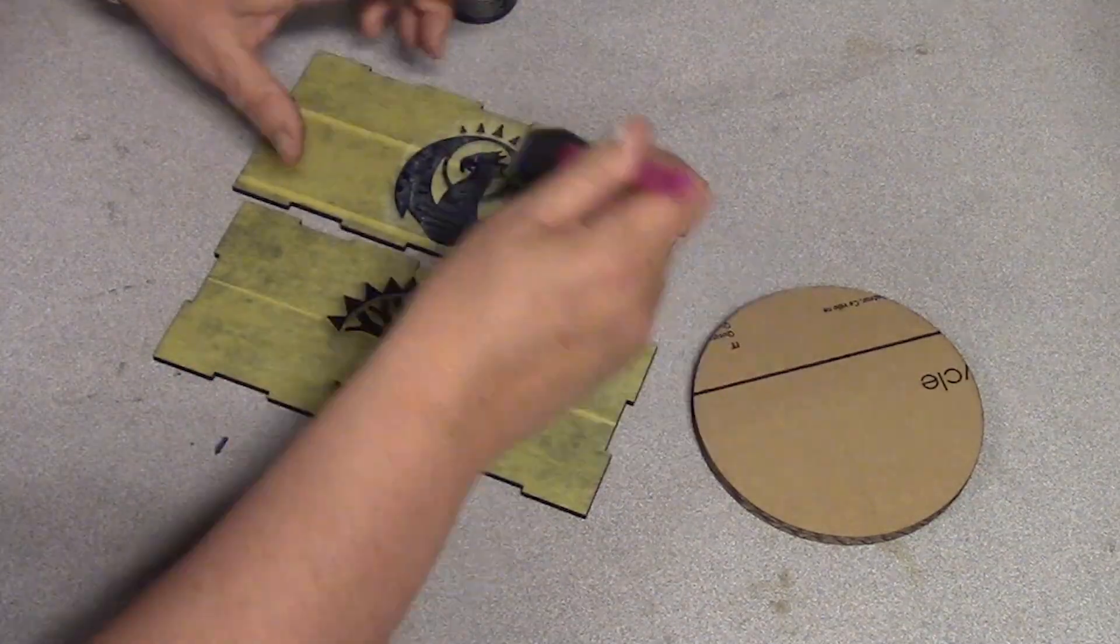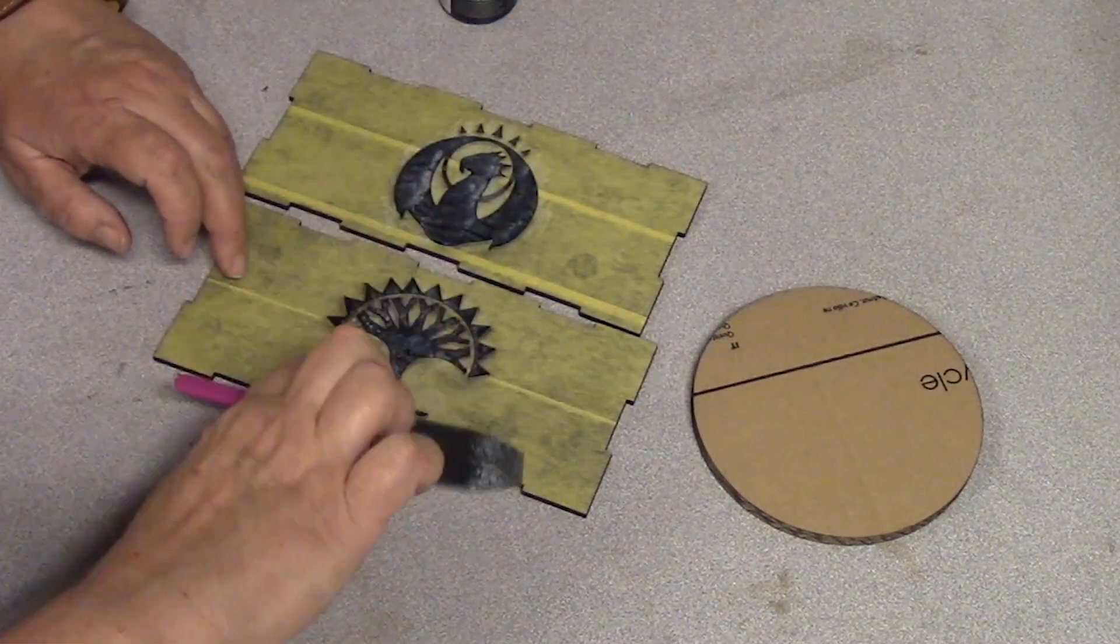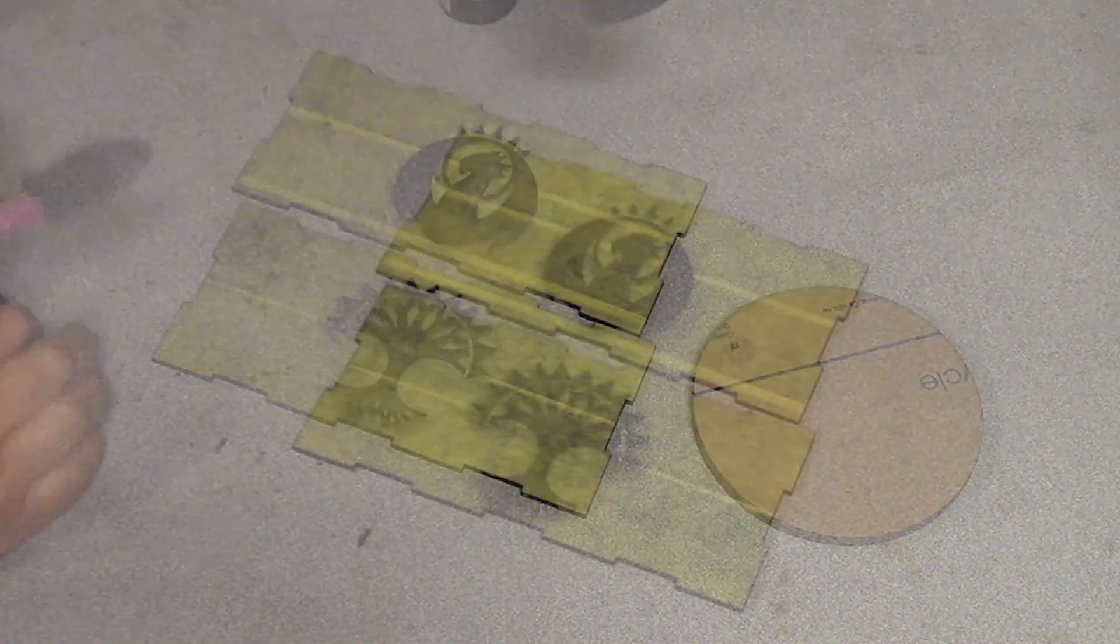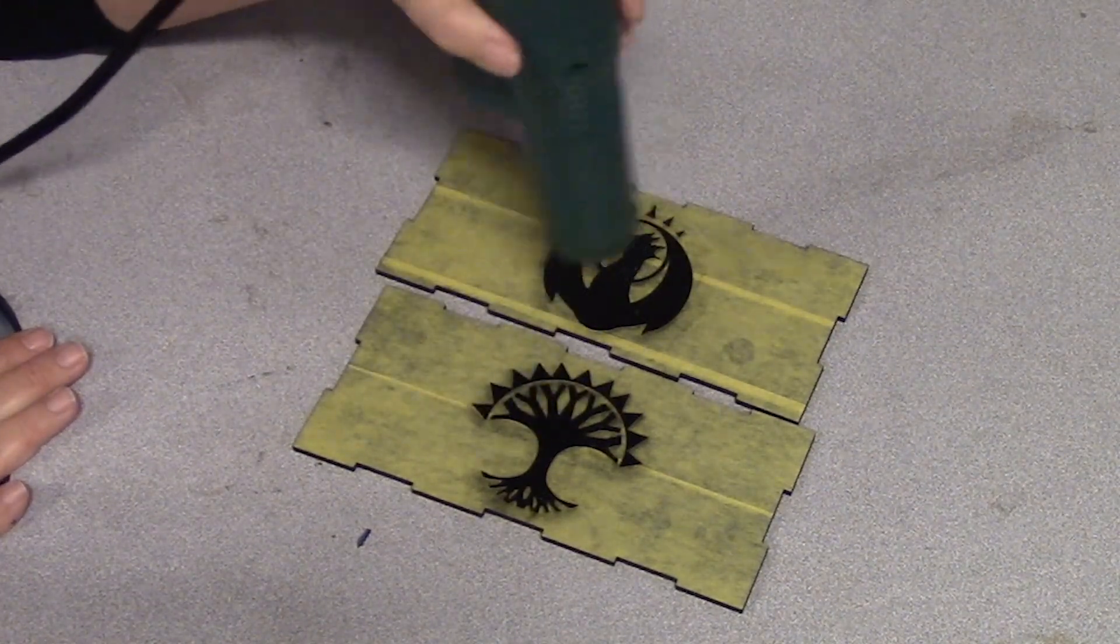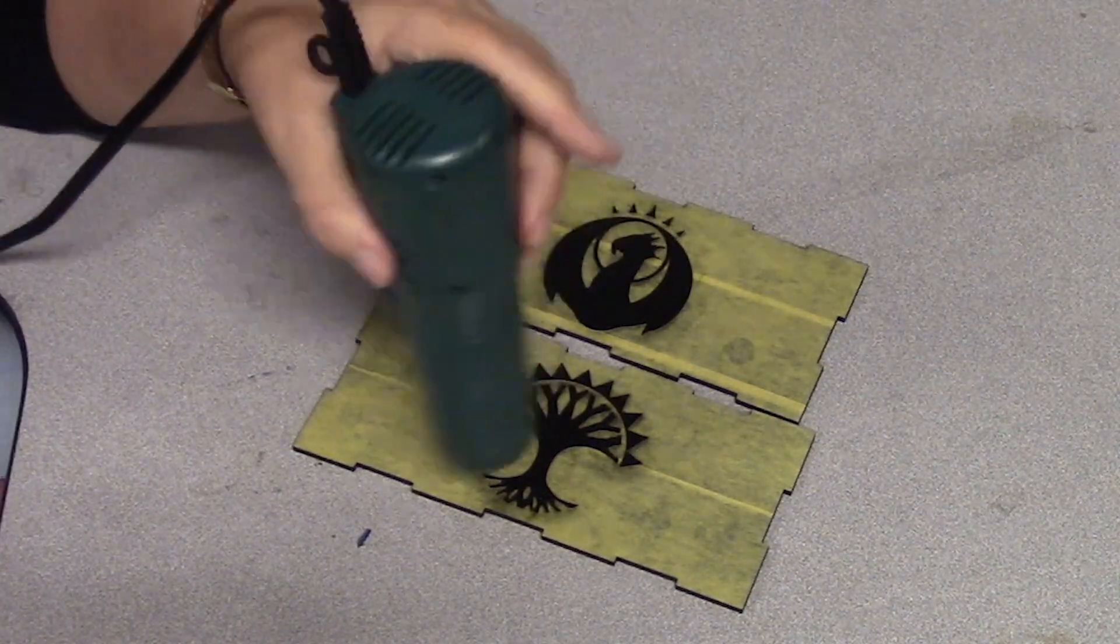The next step is to apply the Speedball Sizing with a foam brush, and then use a heat gun to help it dry faster. When it goes from white to clear, it's done.